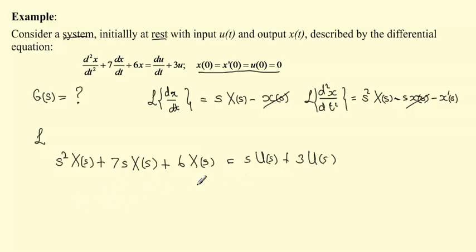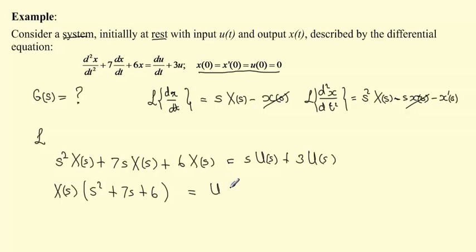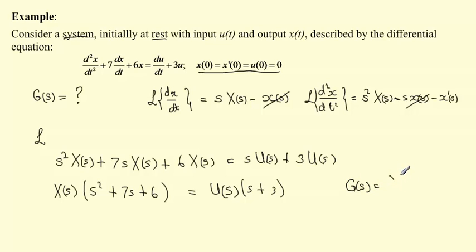You can see that on both sides we have common factors, so we can extract X(s) as a common factor on the left, giving X(s)(s² + 7s + 6) = U(s)(s + 3). Now to get the transfer function — remember the transfer function expresses the input-output relationship — G(s) equals X(s) over U(s).